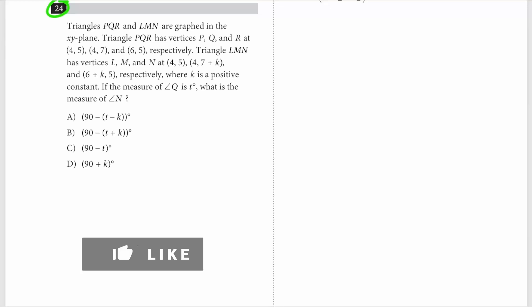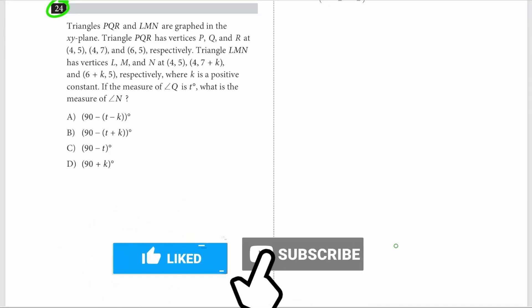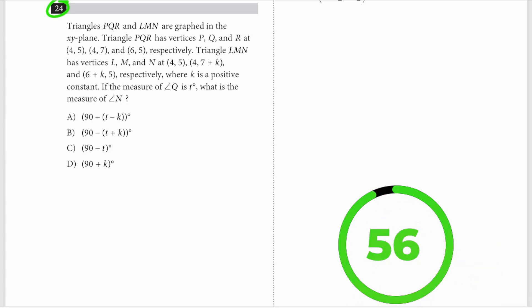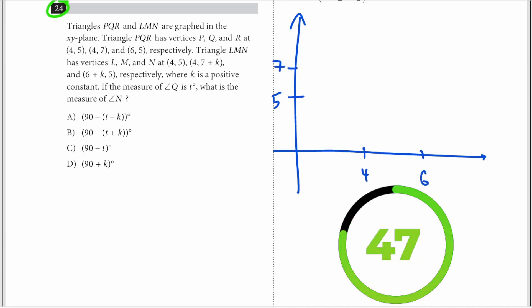So how can you do this problem in 60 seconds or less? Triangles PQR and LMN are graphed. Triangle PQR has vertices P, Q, and R. Let me draw this super fast, so we have 4, 6, 5, and 7.